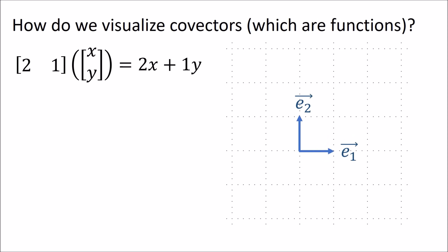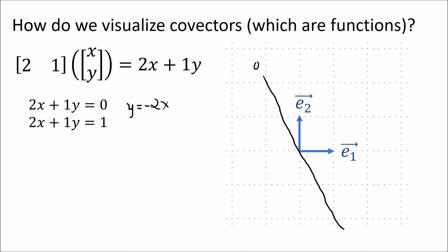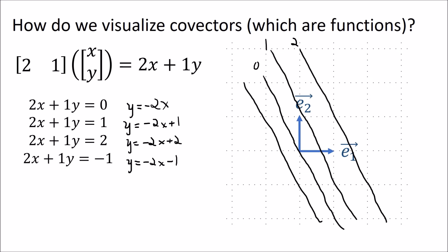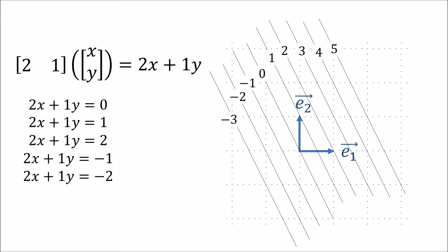To start, let's ask where does this function equal zero? We get the line y equals minus 2x, which is a line like this. Where the function equals one, we get y equals negative 2x plus one — a line with the same slope shifted up a little bit. When the function equals two, we get another line shifted up by two units. When it equals negative one, the same line shifted down; negative two, shifted down even lower. So this is our covector 2, 1 visualized as stacks of lines.